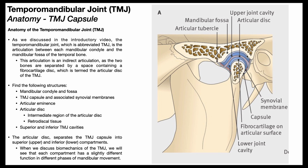It's important to know that the articular disc separates the TMJ capsule into a superior compartment and an inferior compartment because each of these two compartments is involved in a different phase of mandibular movement. We'll talk about that more in the next video when we cover the biomechanics of the TMJ. Make sure to join us there. Thank you.